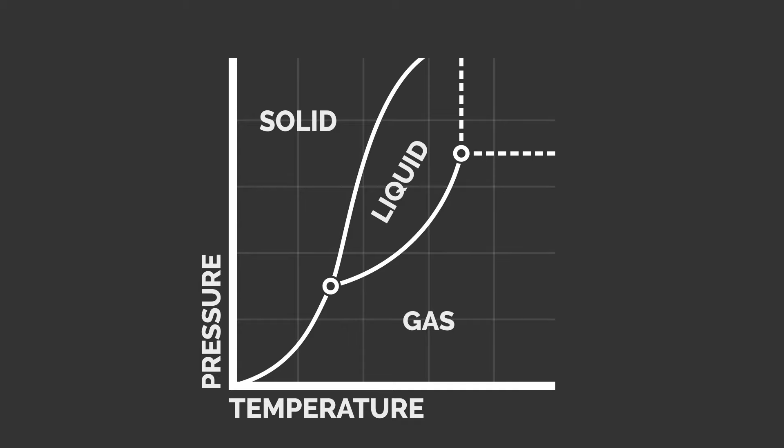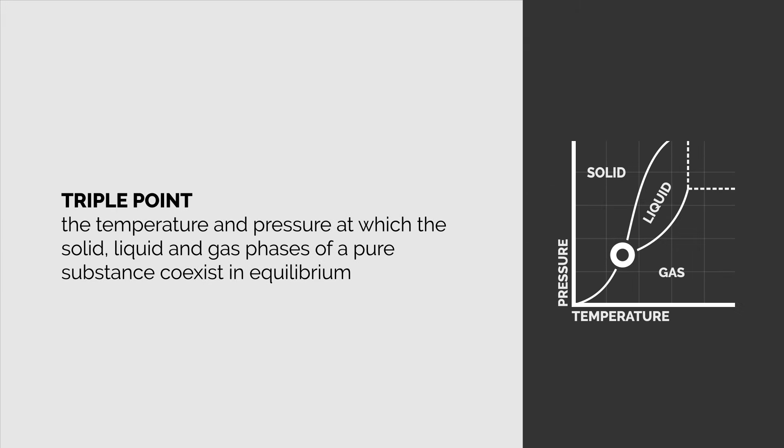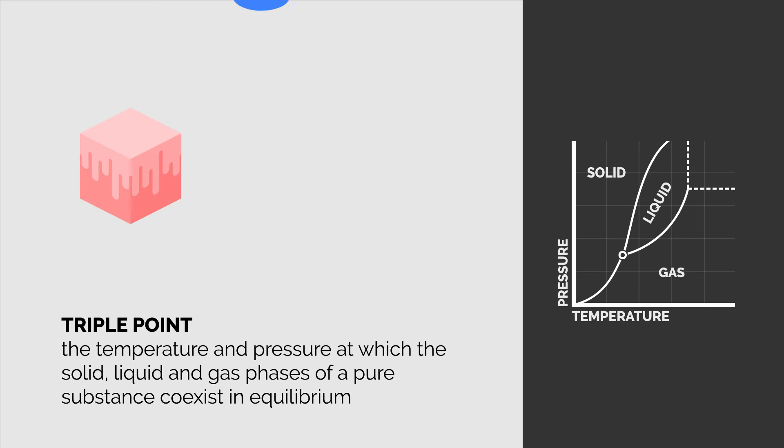The triple point and the critical point. The triple point, the intersection of all three phases, is the temperature and pressure at which the solid, liquid, and gaseous forms of a pure substance coexist in equilibrium.